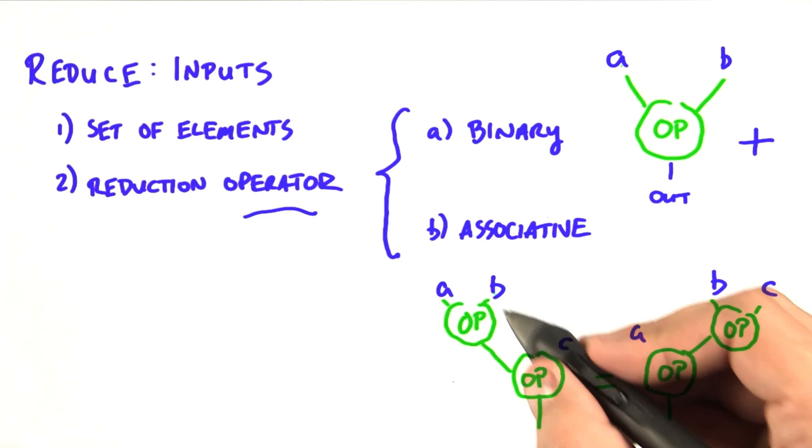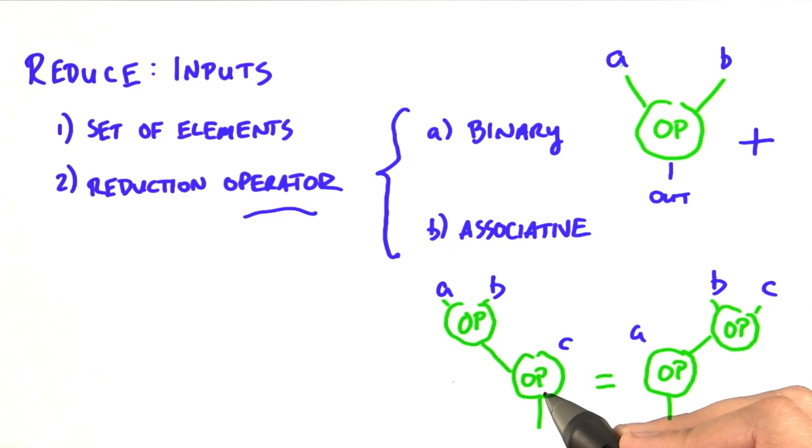To put it simply, a op b, take the result and op it with c, needs to give you the same answer as b op c, and then you op the result with a. You should convince yourself that plus is an associative operator, but minus is not.